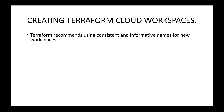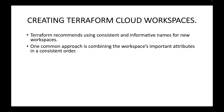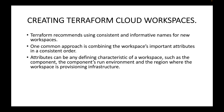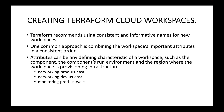When creating a workspace, Terraform recommends using consistent and informative names, making sure you follow a naming convention. One common approach is combining the workspace's important attributes in a consistent order. These attributes can be defining characteristics such as the component, the run environment, and the region. For example: networking-prod-us-east, networking-dev-us-east, monitoring-prod-us-west, monitoring-dev-us-west. Following this convention helps you understand which workspace is for which component — for instance, networking running in the prod environment in the US East region.